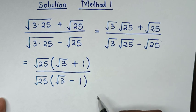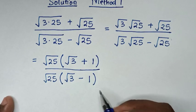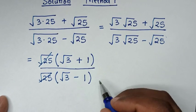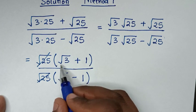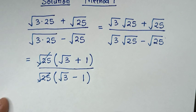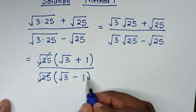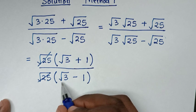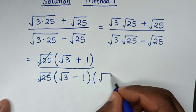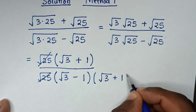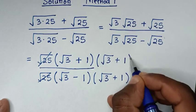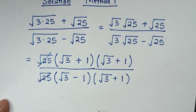After simplification and cancellation, it will be square root of 3 plus 1 over square root of 3 minus 1. From here we rationalize the denominator, because the denominator is square root of 3 minus 1, so we multiply by square root of 3 plus 1 in both the denominator and the numerator.